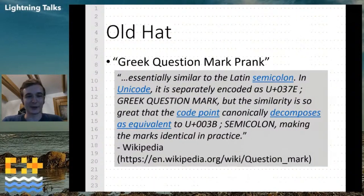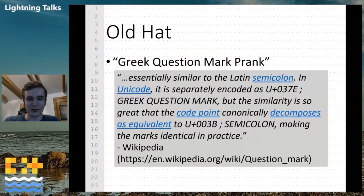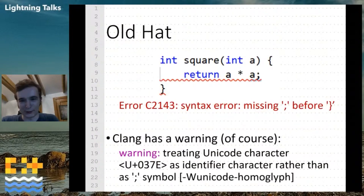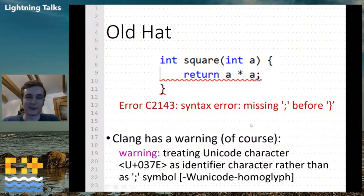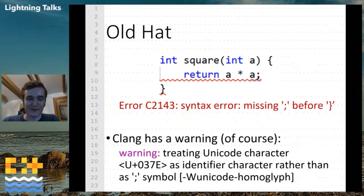What can you do with Unicode? Well, there's the old Greek question mark prank. Basically, the Greek question mark looks like a semicolon but is a different Unicode code point. So if you put it in the code, it looks right but it's wrong, and you get a syntax error like 'missing semicolon' even though it looks like it's there. And of course, Clang has a warning for that, which you see there.